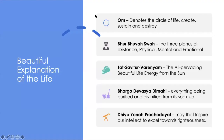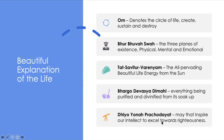It is a beautiful explanation of life. Om denotes the circle of life: create, sustain, and destroy — the three planes of existence: physical, mental, and emotional. That Savithur Varinam is the all-pervading, beautiful life energy from the sun — everything being purified and divinified from its source — and may that inspire our intellect to excel towards righteousness.